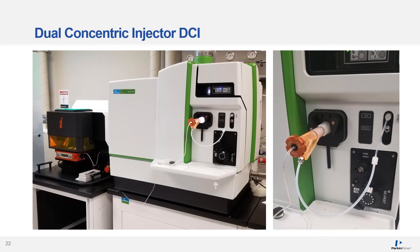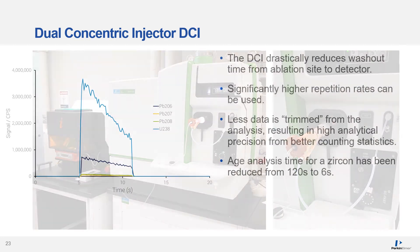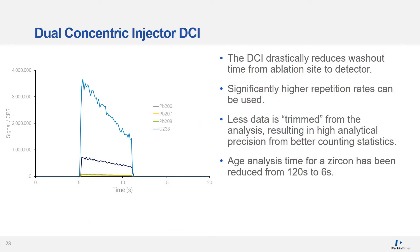Another update to the laser ablation ICP-MS offering is the Dual Concentric Injector, or DCI, shown here installed in the Nexian 2000 ICP-MS. It has been designed to have a minimum dead volume and space for particle deposition leading to the injector of the ICP-MS. The DCI reduces washout significantly — by reducing this washout from ablation to ablation, less data is trimmed from the analysis and a considerable reduction in analysis time can be gained. In this example, you can see a 6-second ablation, whereas prior to using the DCI the ablation time was about 120 seconds to do the same zircon dating.